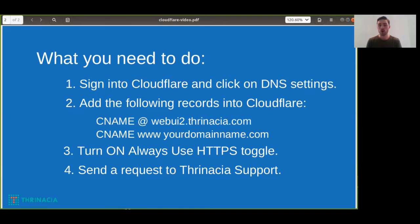Three, you'll have to turn on the Always Use HTTPS toggle. This will be in the SSL/TLS settings that are right beside the DNS settings. After you've done that, send a request to Thranacia support. You can do this by emailing us at support@thranacia.com or you can create a ticket in the Nexus system. Just make sure that you tell us you want to use Cloudflare and the domain name that you plan on using.